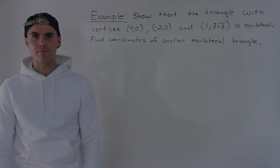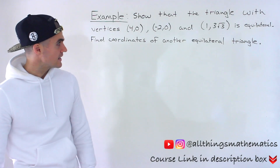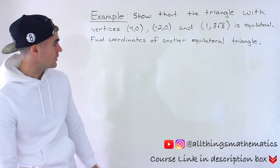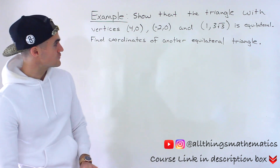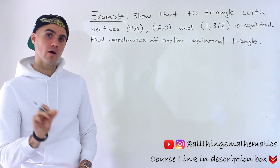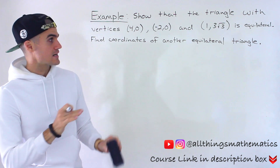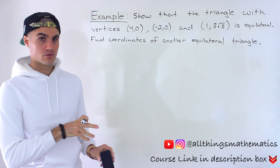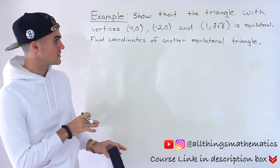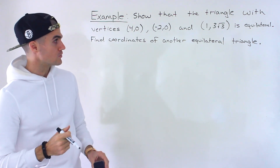What's up everyone? Welcome back. Patrick here. Moving on to the next question. We have to show that the triangle with these vertices — (4, 0), (−2, 0), and (1, 3√3) — is an equilateral triangle. And then we have to find the coordinates of another equilateral triangle.